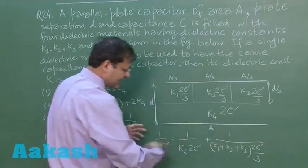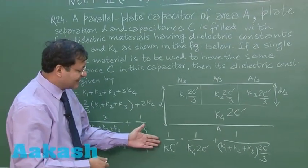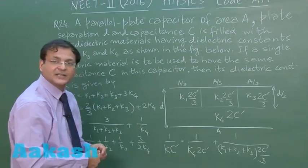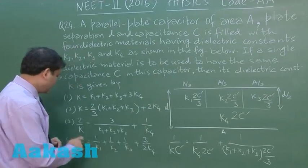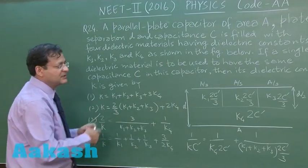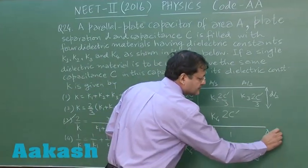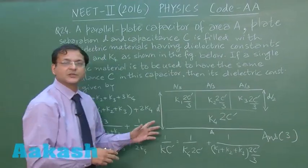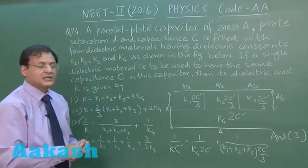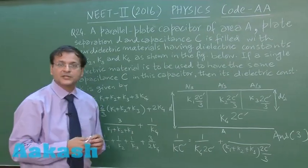Now both the sides C dash will be cancelled out, and you can calculate the expression relating K with K1, K2, K3 and K4. If you do that, you will be finding option 3 correct option for this available situation. So we are marking answer 3 for this question, which is the most appropriate answer for this particular situation.